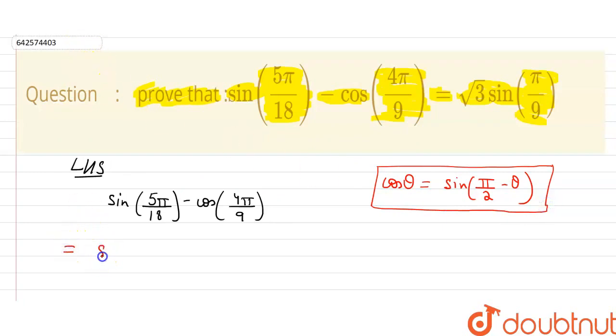So this equation can be written as sin 5π/18 minus cos θ can be written as sin of π/2 minus θ. Then θ here is 4π/9.